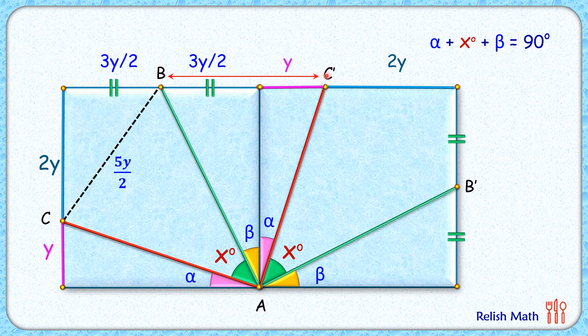Now how about this length BC'? So this will be 3y by 2 plus y, and magically it's coming out to be the same, 5y by 2.